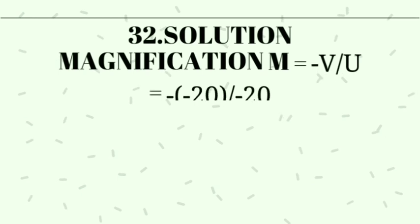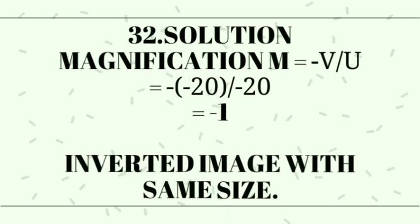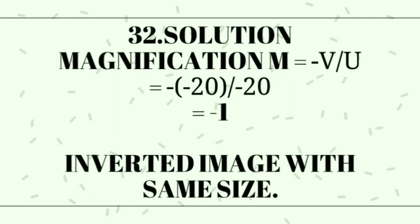Problem 32 solution. Use magnification formula, m equal to minus v by u. Substitute v and u values, make it cancel and minus 1 remains. It means inverted image is formed with the same size at same distance.